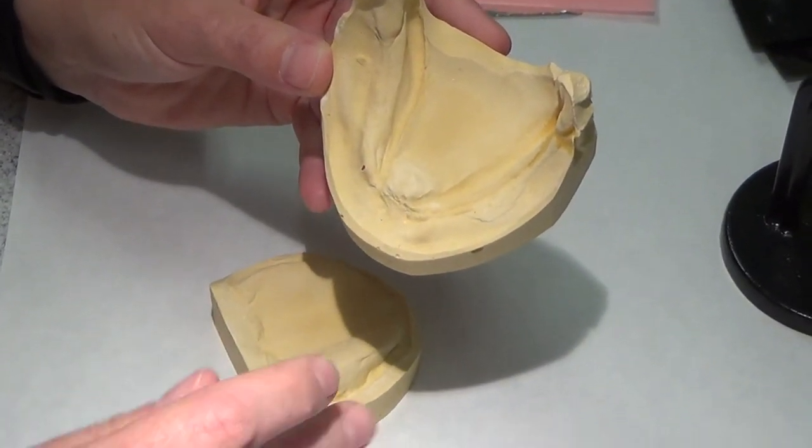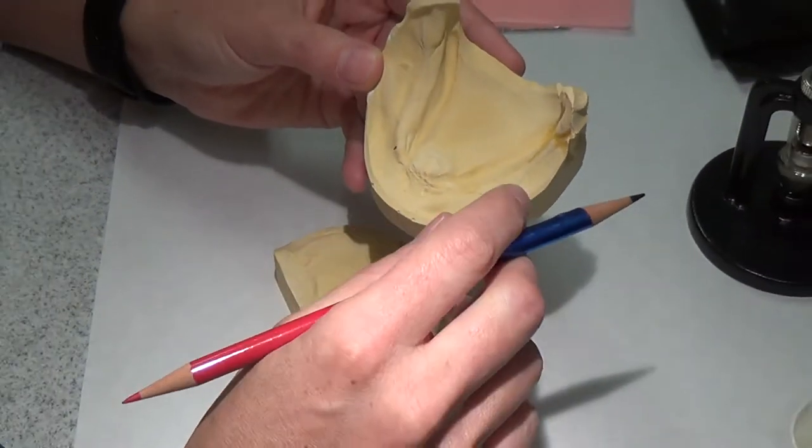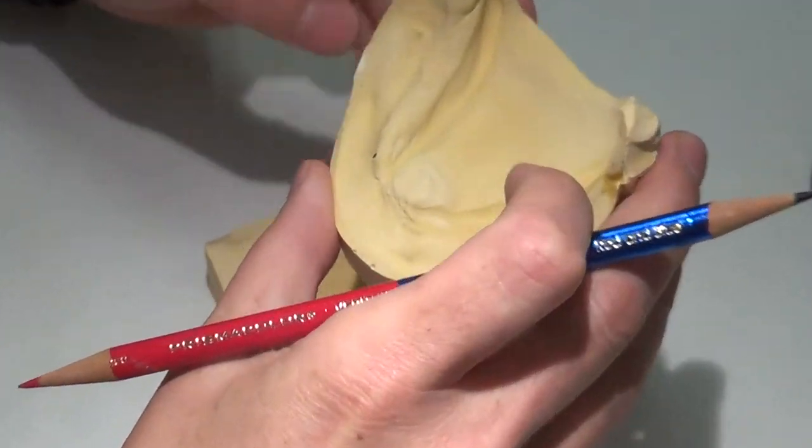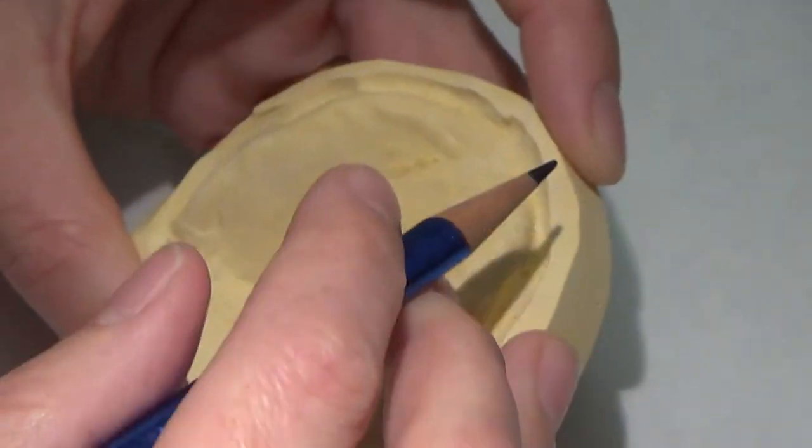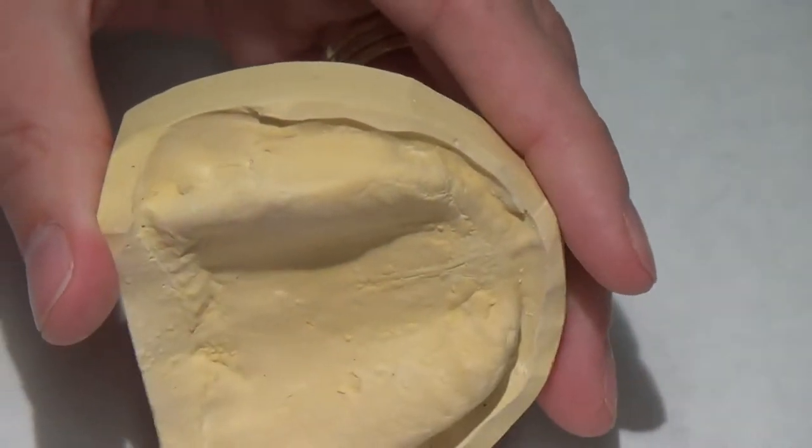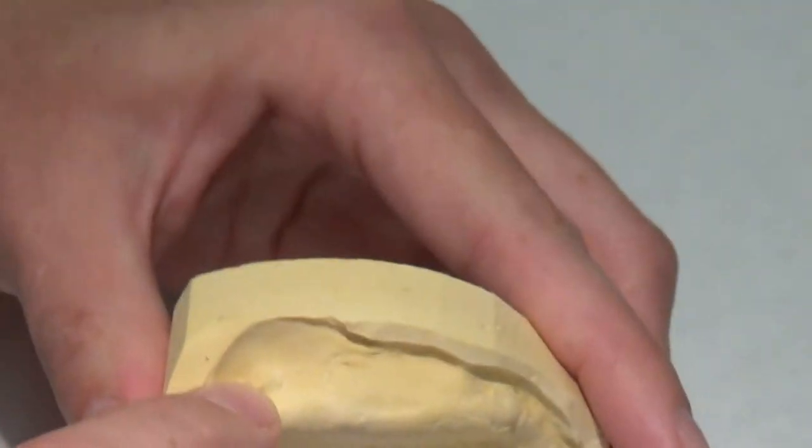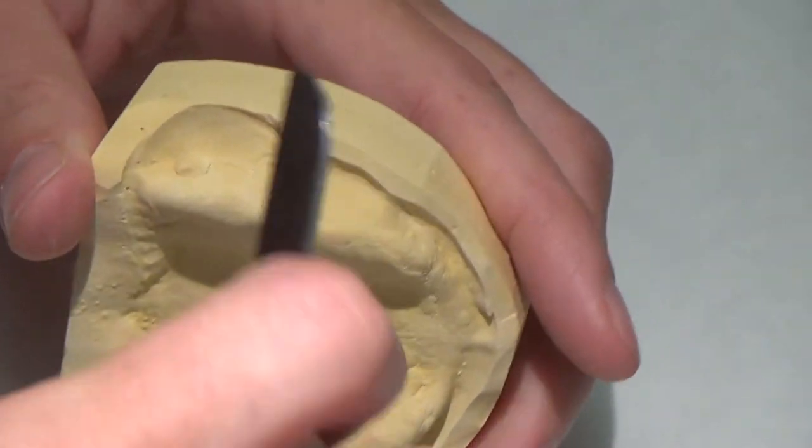So the first thing I'm going to do is come in and mark these casts. I'm going to start with the maxilla and I'm going to go around this bleb right here. Something I don't love. I'm going to go ahead and get rid of it.